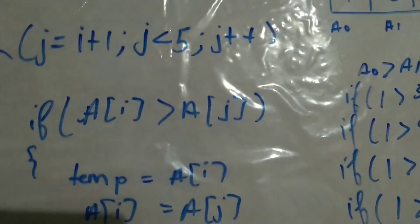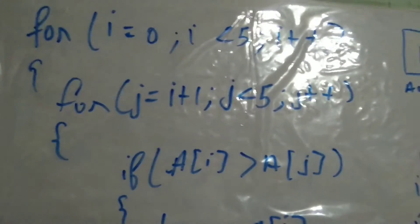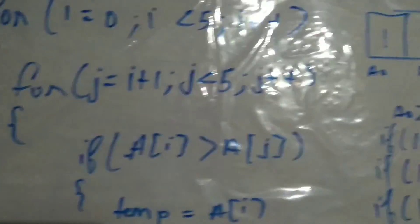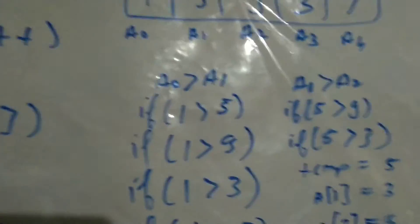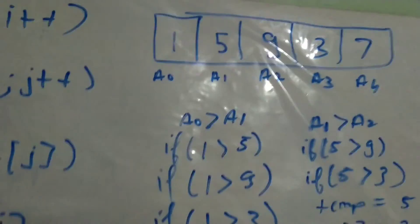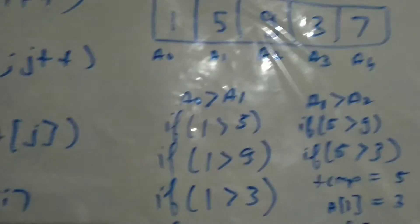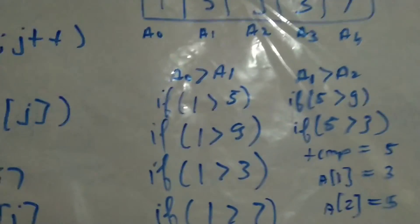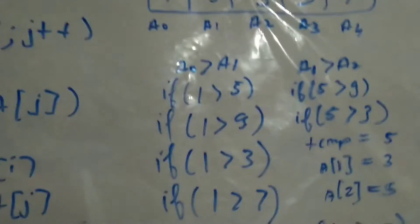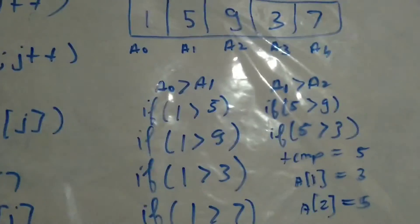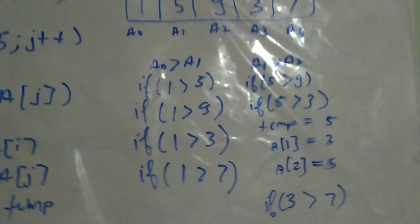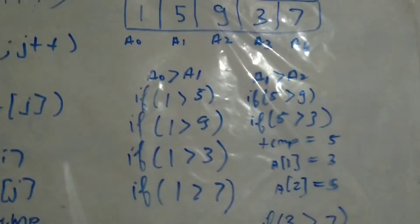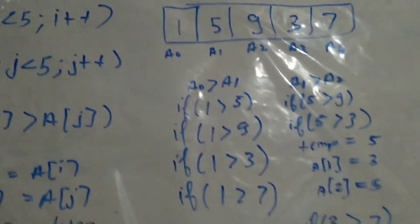Once the j loop is completed it will increment the i loop, so i goes from zero to one. At the initial case: is one greater than five? No. Is one greater than nine? No. Is one greater than three? No. Is one greater than seven? No. So the position of one will not change — it will remain at a of zero.